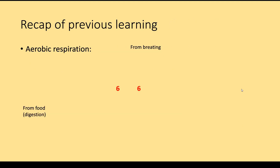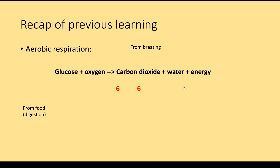Let's have a look how you got on. Looking at aerobic respiration, here's our equation. You should have written down that glucose and oxygen gives us carbon dioxide, water, and energy. Here's our equation. The symbol equation: C6H12O6 for glucose, O2 for oxygen, CO2 for carbon dioxide, H2O for water.